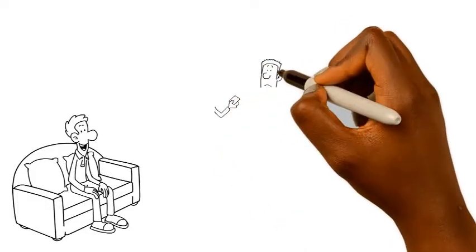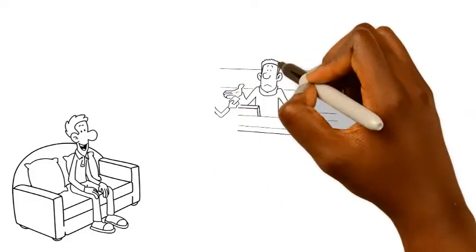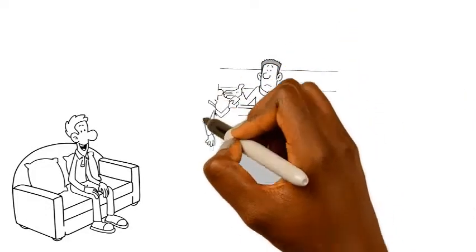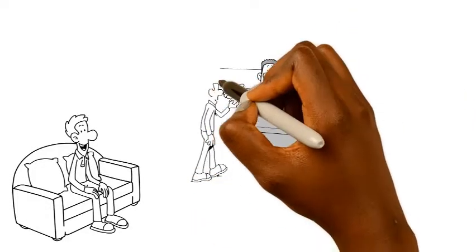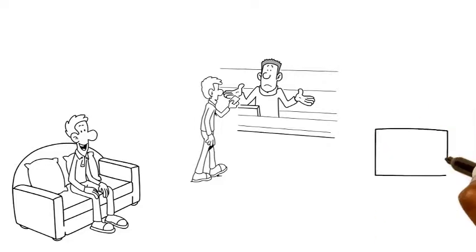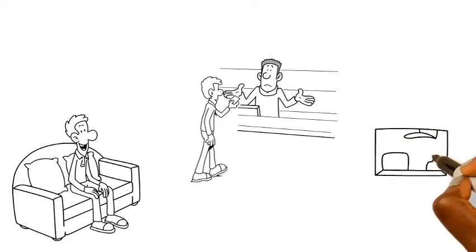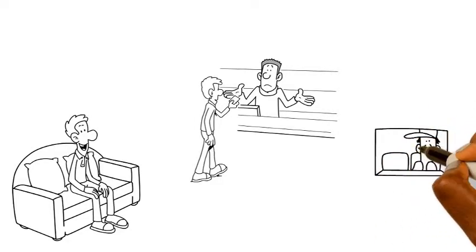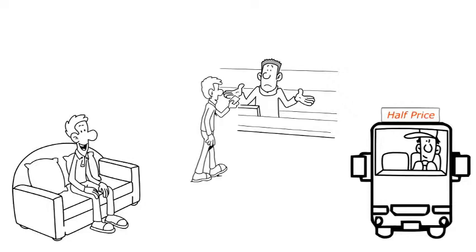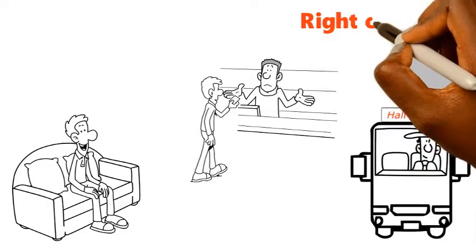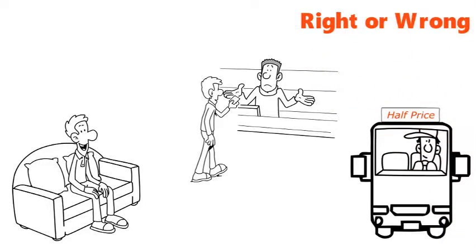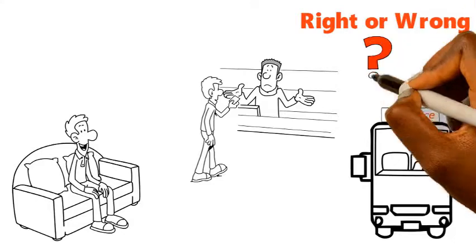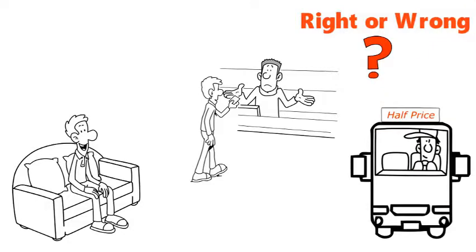Scenario 7. Jonas told a bus conductor that he was too late to buy a ticket. The conductor offered Jonas a half-price fare if he does not take the ticket. Do you think the bus conductor has committed an offense? If yes, what is his offense? If no, why?